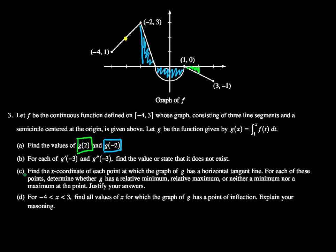All right, part c asks us to find the x-coordinate of each point at which the graph of g has a horizontal tangent line. For each of these points, determine whether g has a relative minimum, a relative maximum, or neither a minimum nor a maximum at the point, and justify your answers. And this justify your answers line right here is very important. It means that we need to be very clear about why we said what we said.